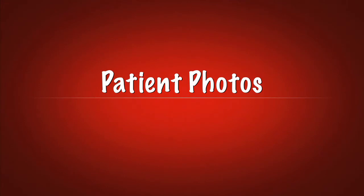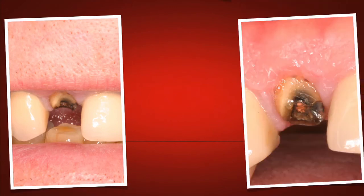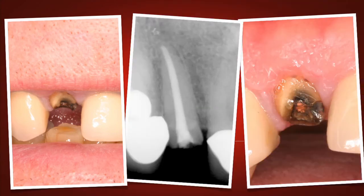Let's begin by taking a look at our patient photographs and radiograph. A patient came to the office with his immediate concern and chief complaint that he had broken tooth number 7 off. As we can see from the x-ray and the clinical photos here, tooth number 7 is pretty much broken to the gum line, had previously had a PFM, and had a pre-existing root canal treatment.